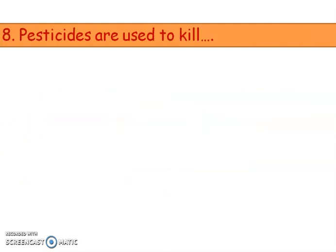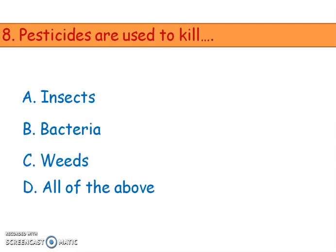Next question: pesticides are used to kill — option: insects, bacteria, weeds, or all of the above. Pesticides kill insects, bacteria, and weeds. So the answer is all of the above.